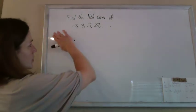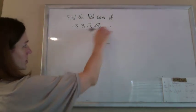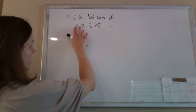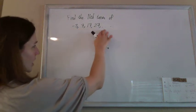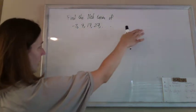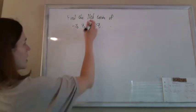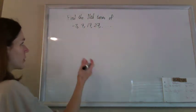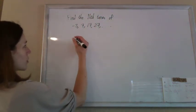We want to find the 11th term of this sequence. We can tell we're adding 10 every time. You could just keep adding until you get to the 11th one, but what if they had asked for the 111th? We wouldn't want to do that. So we have formulas.